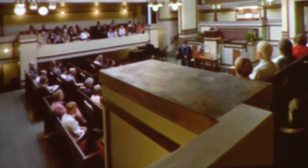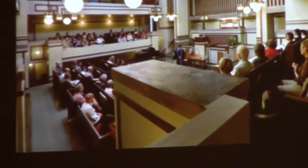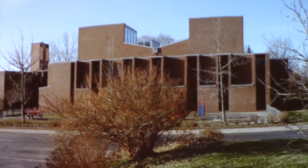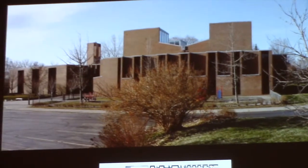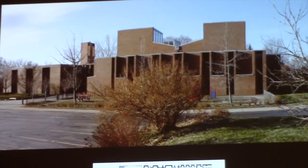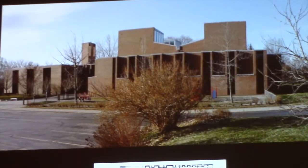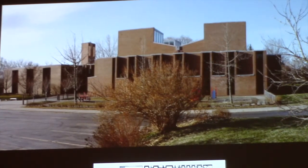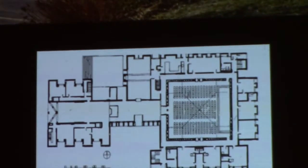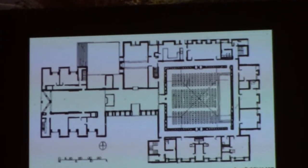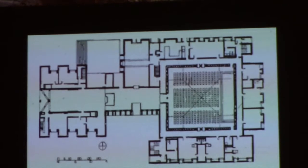Another famous Unitarian church architecturally is the Unitarian Church of Rochester, New York, 1967, designed by the Philadelphia architect Louis Kahn, who taught at Penn when I was a student there. He's considered one of the great architects of the late 20th century. And again, it's another Unitarian church that is devoid of obvious religious symbolism. The plan is very simple — it's a square.